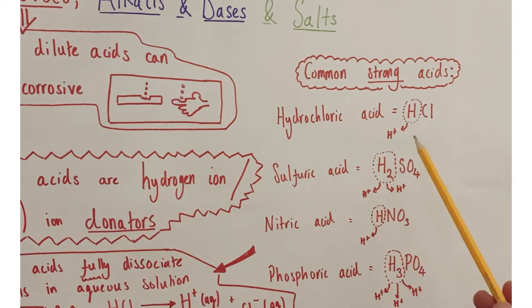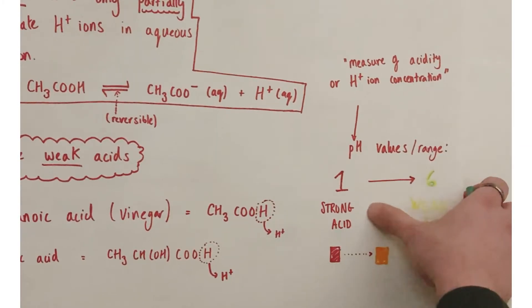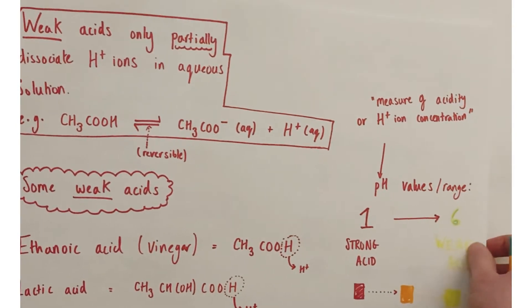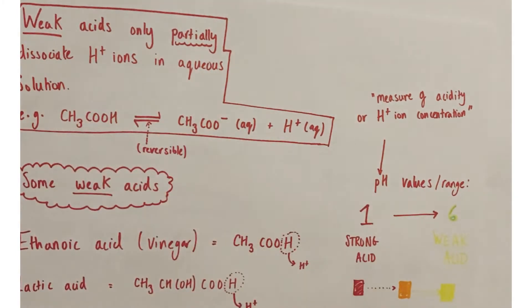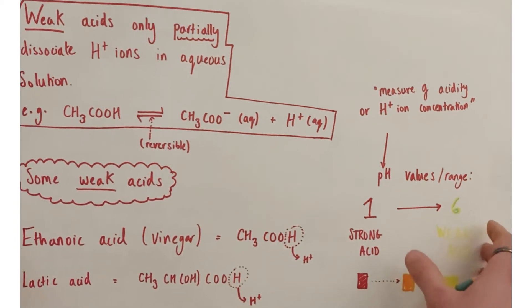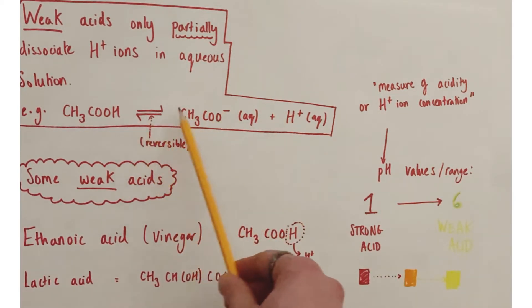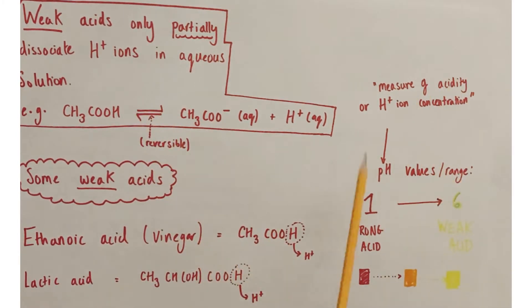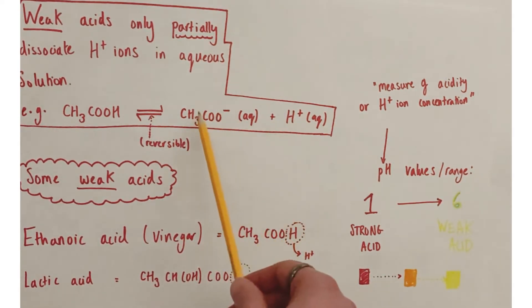A weak acid is only partially dissociating in water, meaning only a small proportion of the weak acid molecule population will be releasing their hydrogen ions at any one time. A nice example is vinegar or ethanoic acid. Ethanoic acid releases a hydrogen ion, but rather than a full directional arrow there is a reversible symbol, meaning the hydrogen ion will recombine and reassociate with the CH3CO⁻ ion.